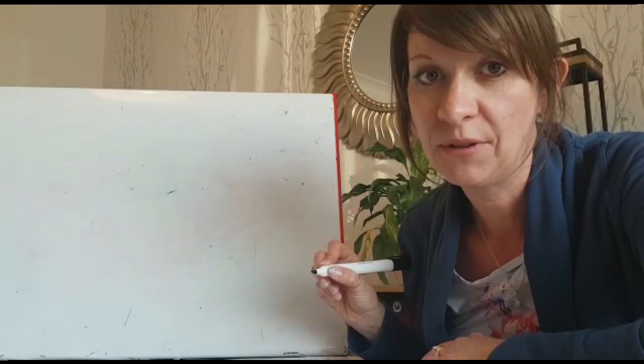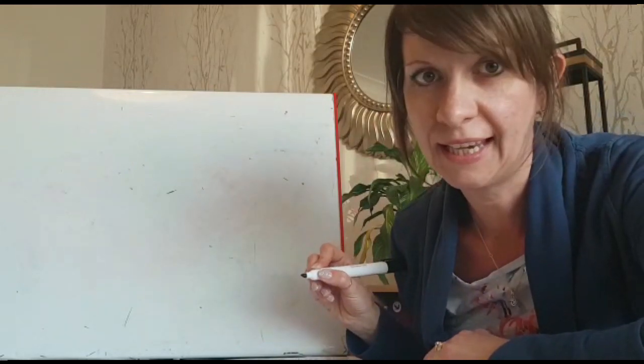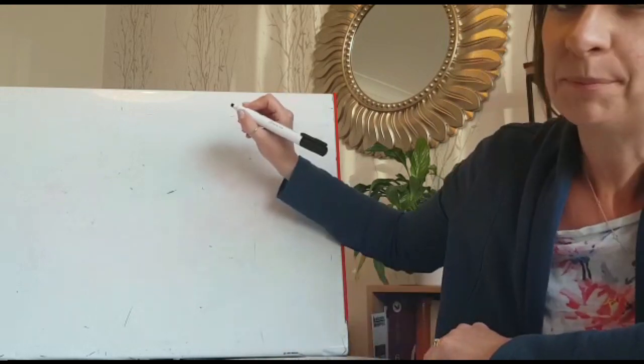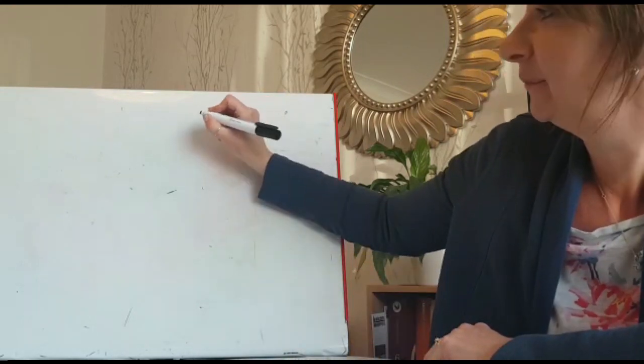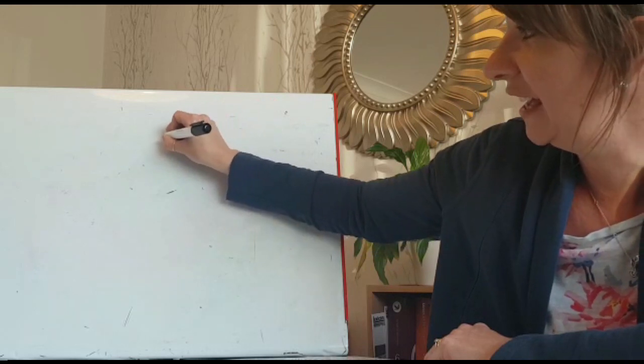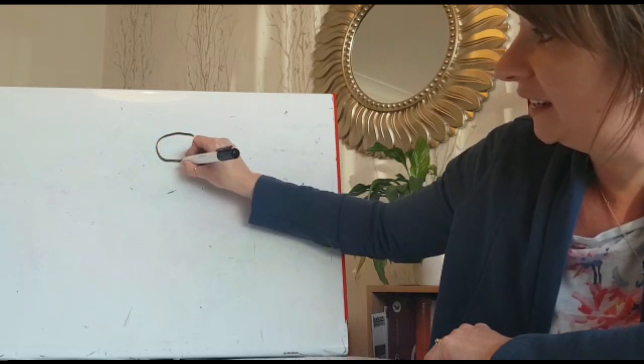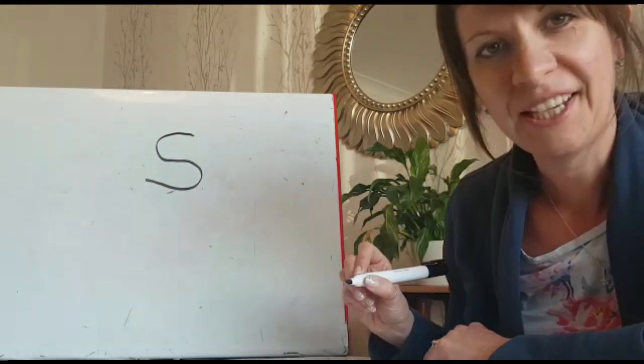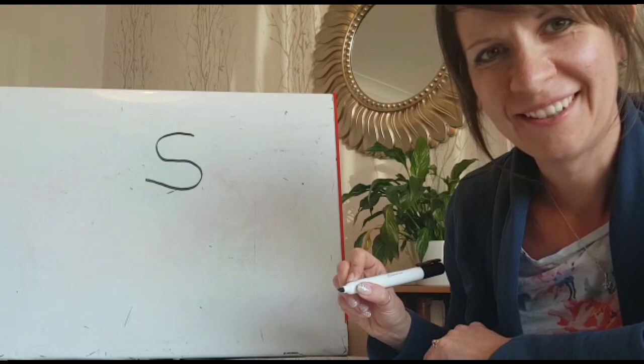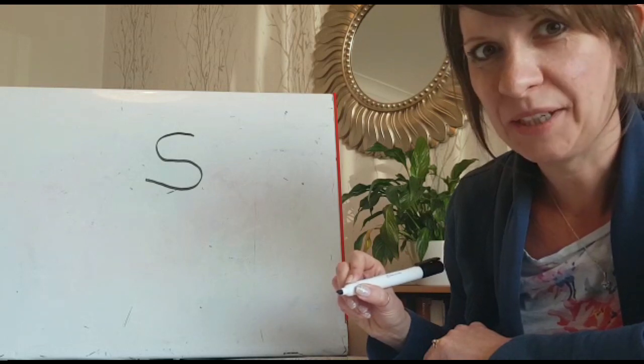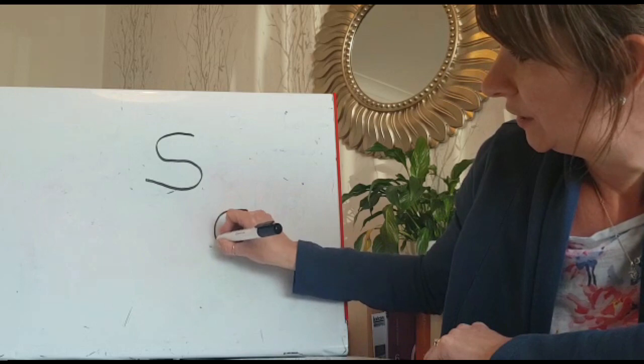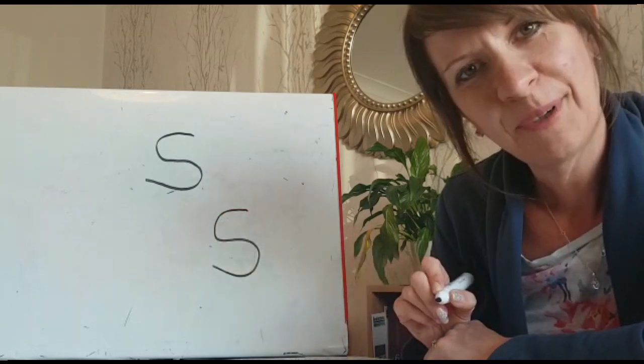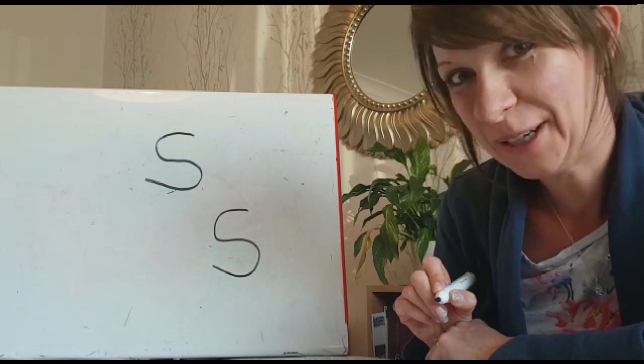My turn first and then you can have a go. Go to start there and I go round a bit like a snake in the grass. Yeah that's my sound. I'm going to try one more and then it'll be your turn. Why don't you have a go now on your paper. You can choose whatever color pen you want to use.